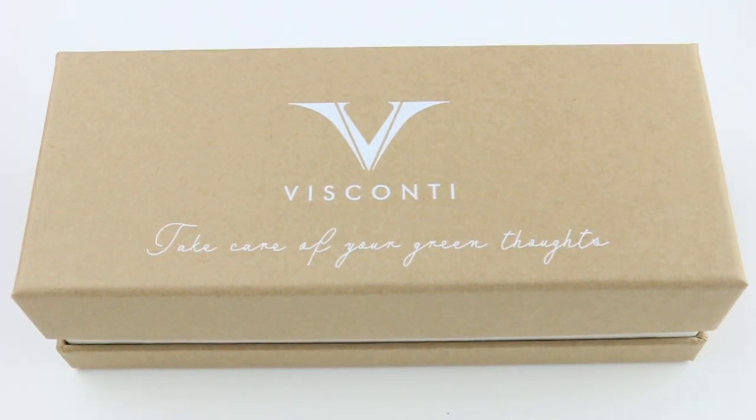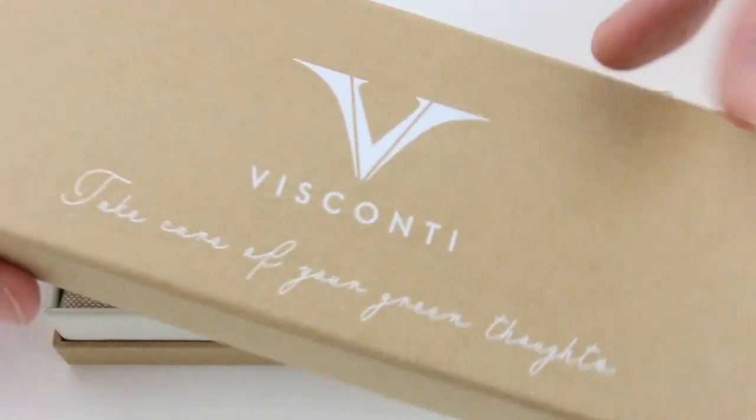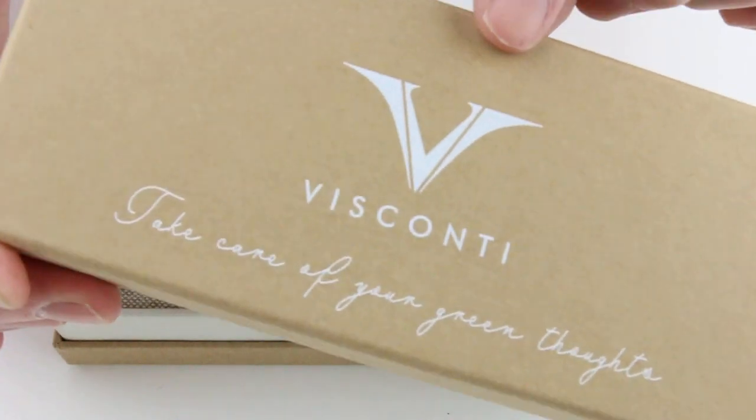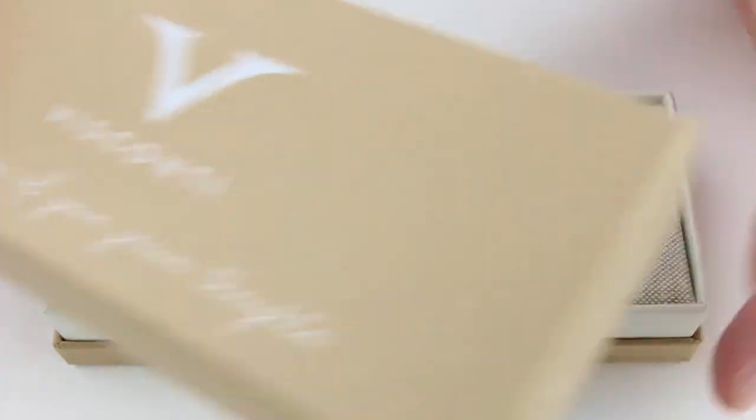This is the Visconti Ecologic fountain pen. The pen comes in a cardboard box, just a rough looking cardboard with an eco-friendly feel. The Visconti logo is printed on the top of the box lid.